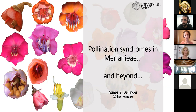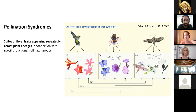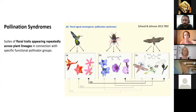Since not all of you come from a pollination biology background, I thought I'd first introduce the concept of pollination syndromes briefly. Pollination syndromes are suits or combinations of floral traits that appear repeatedly across different plant lineages that can be distantly related, and they always appear in connection with specific functional pollinator groups — perfect examples of convergent evolution, not just in one trait but in many traits, in trait combinations.